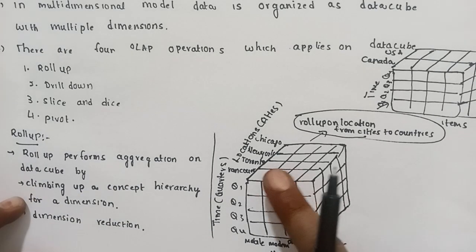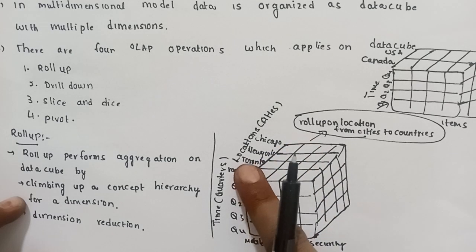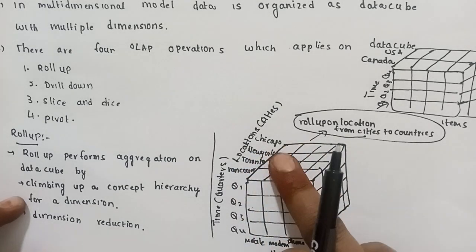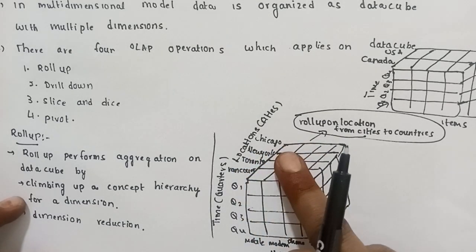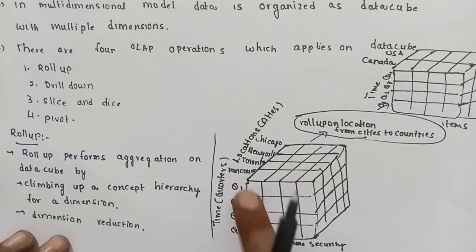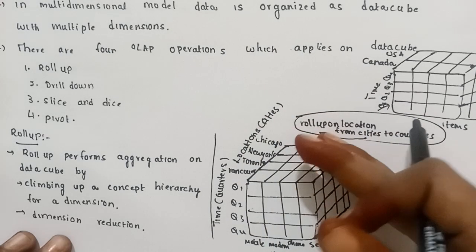For example, suppose there are four cities. These cities can be rolled up to represent countries. Similarly, there are four quarters which can also be rolled up. Roll up reduces the dimensions.